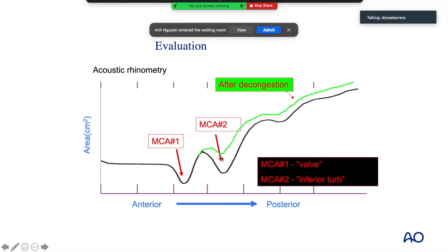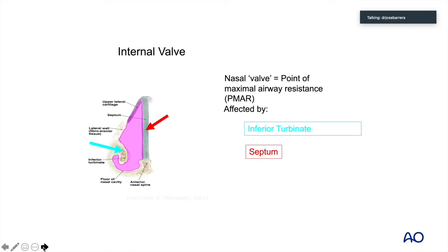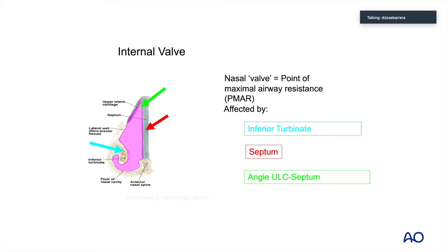Diving further into what the internal valve is: it is defined as a point of maximal resistance affected by several structures. It is a cross-sectional area affected by the inferior turbinate laterally, the septum medially, and the upper lateral cartilage laterally. We call the angle between the upper lateral cartilage and the septum as the angle which defines the internal valve. This angle should be about 20 degrees; however, it is a cross-sectional area when describing the point of maximal resistance.